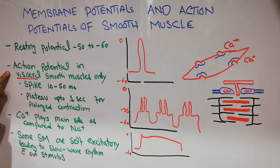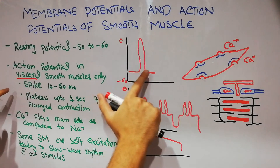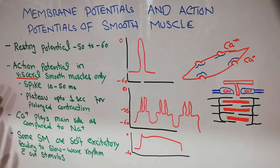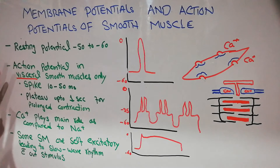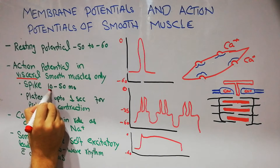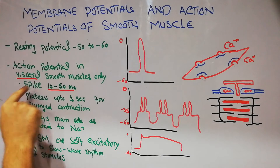The action potential in visceral smooth muscle is still of two types. The first type is the spike type. In the spike type we get a rapid action potential — a rapid movement of ions along the membrane, then rapid depolarization followed by rapid repolarization. This may mostly take up to 10 to 50 milliseconds, which is a small portion of a second.